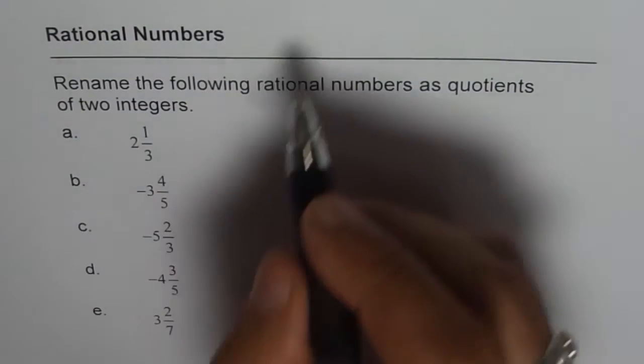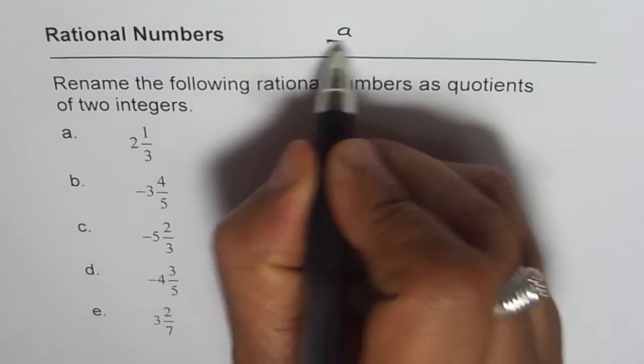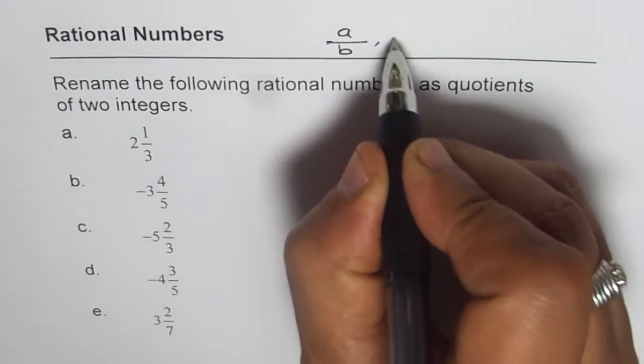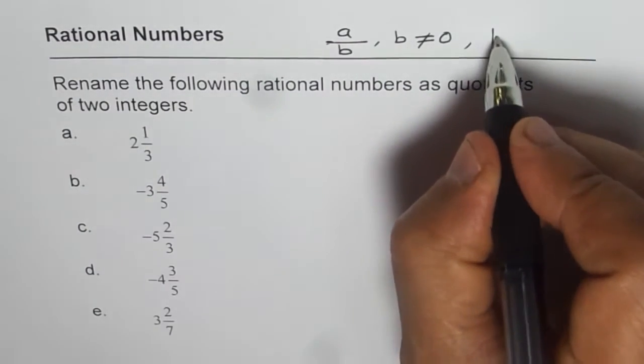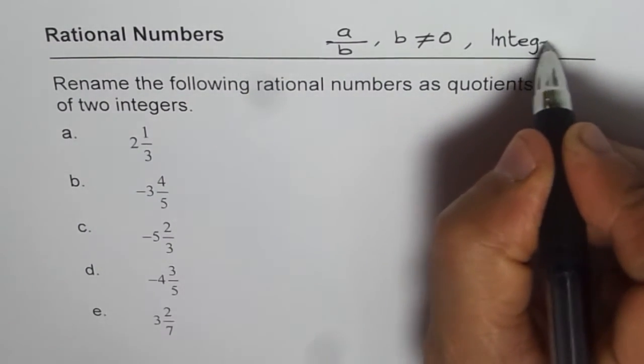As you know, rational numbers can be written as A over B where B is not equal to 0 and both A and B are integers.